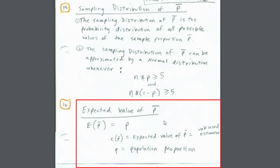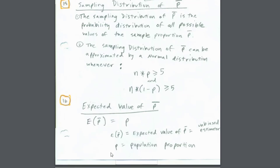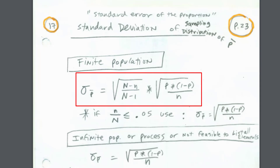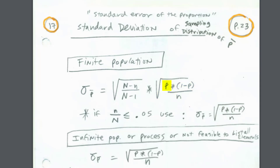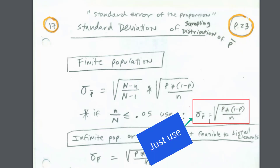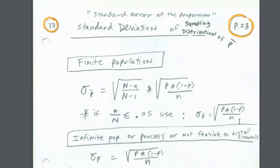The expected value of p-bar: the mean of all p-bars equals the population proportion. We also need the standard error, which is the standard deviation of the sampling distribution of p-bar. The formula is the square root of p times the complement of p divided by n. There's also a correction factor — the same as the previous video — but whenever sample size divided by population size is less than or equal to 0.05, we don't need it.